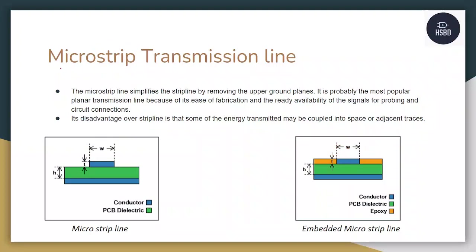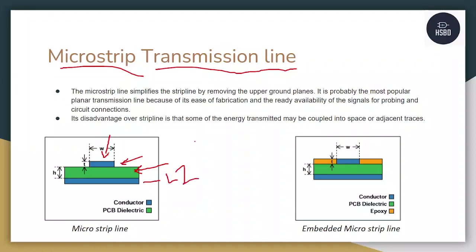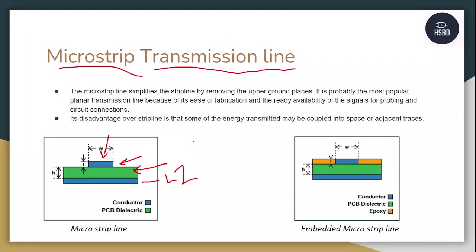Microstrip transmission lines are one of the most commonly used transmission lines in PCB designs. Whenever a trace is implemented on the top or bottom layer of the PCB board, those traces are known as microstrip lines. The blue part shown here is the conductor trace and the green part is the dielectric material. The top layer trace is on layer 1, and layer 2 is beneath it in the PCB stack-up.